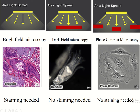No staining is required in dark field and phase contrast microscopy. In dark field, living cells can be observed and the background is black due to the blockage of the central light, and the specimen is seen due to the peripheral light passing through it. In phase contrast, the intermediate light source is used so the background is grey and the tissue appears in different shades of grey.